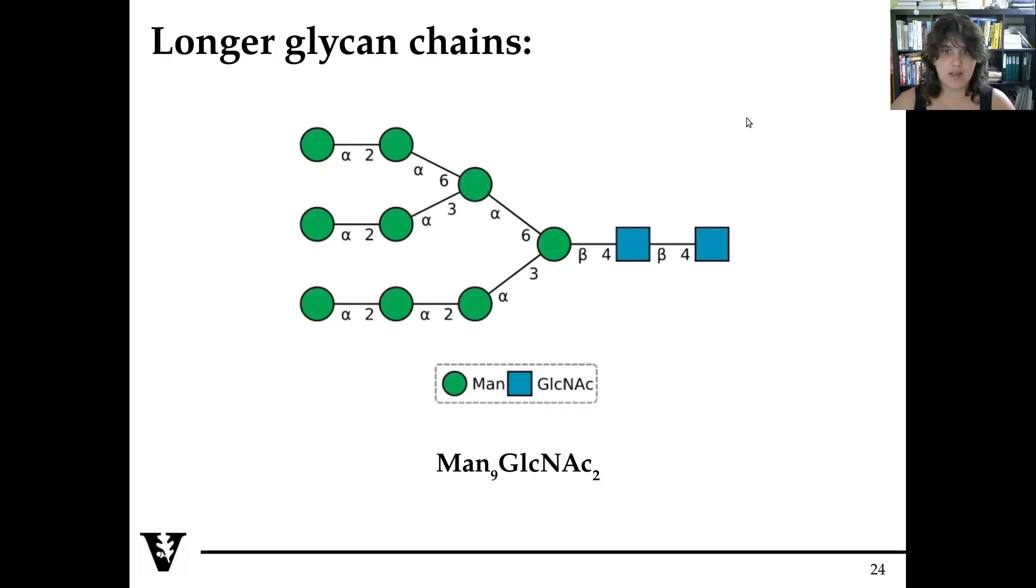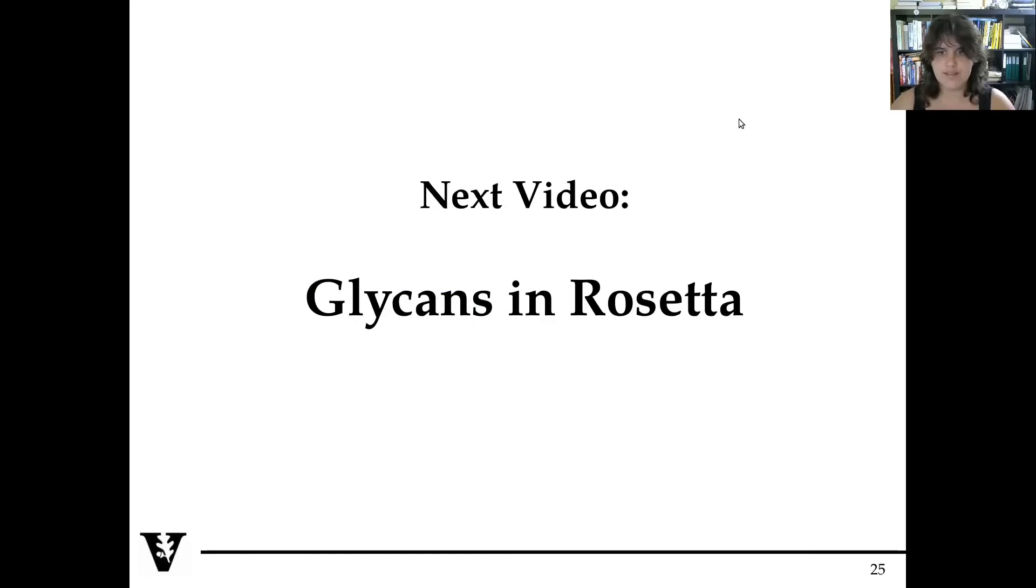I hope this refresher is going to help you. We will talk again about nomenclature in Rosetta in the next video. That is glycan in Rosetta. And thanks for listening and do not hesitate to write me if you have any questions. Bye!